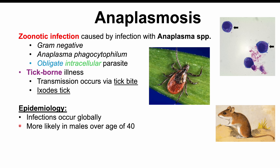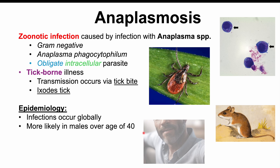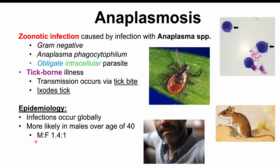Anaplasmosis can occur in all age groups, but is more likely in males over the age of 40. Males slightly outnumber females at a ratio of 1.4 to 1, so males are on average slightly more likely to get infected.